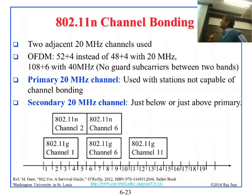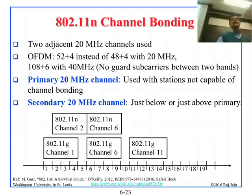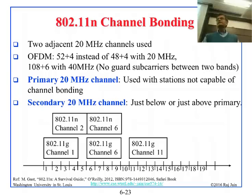Even though you are using channel bonding, you will have to declare one channel as primary, because some stations cannot do bonding. The transmitter can do bonding but the receiver cannot, so you have to speak on one channel. Everybody declares what they can do, and if you find a station that also does bonding, then you can use 40 megahertz. The primary is also where you send the beacon, and in the beacon you declare that this particular network has channel bonding and uses these two channels.